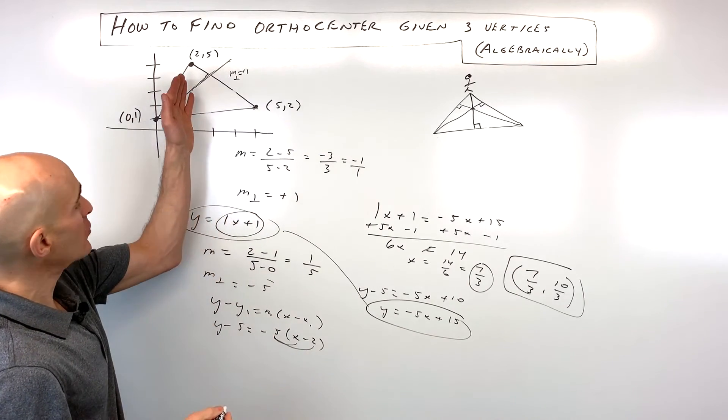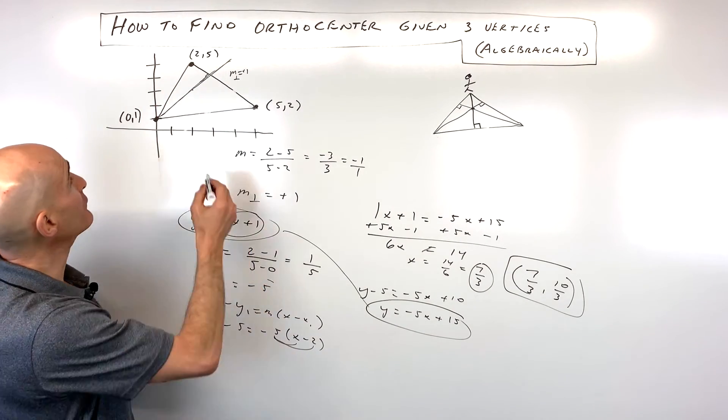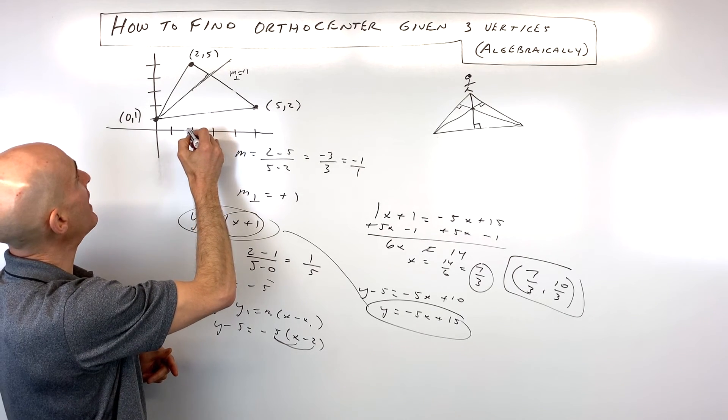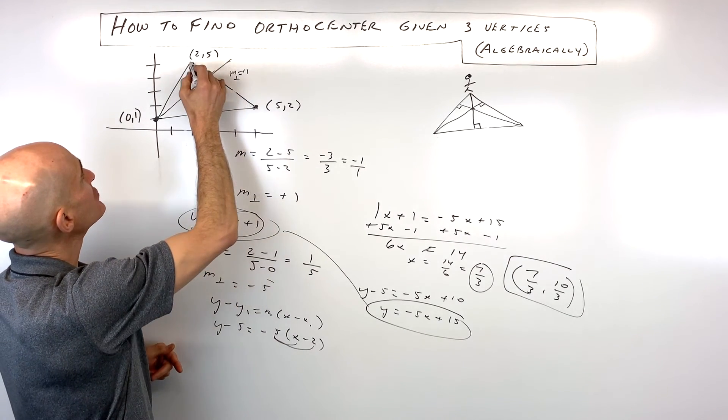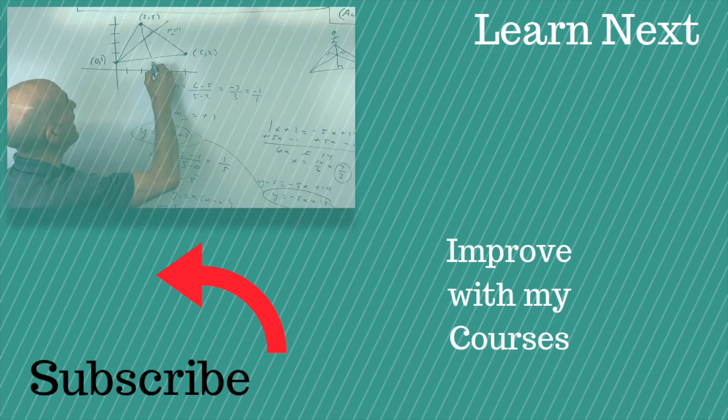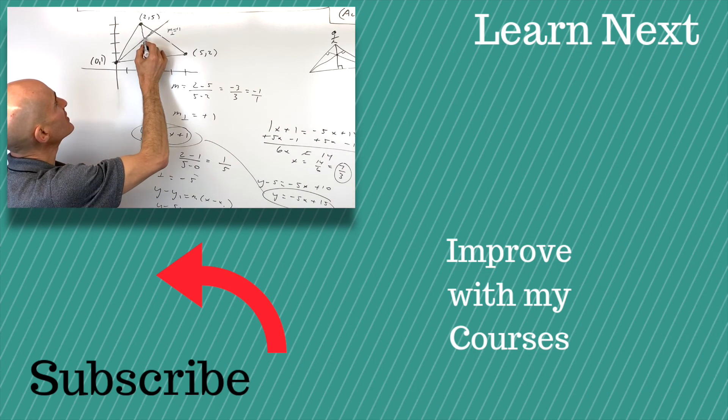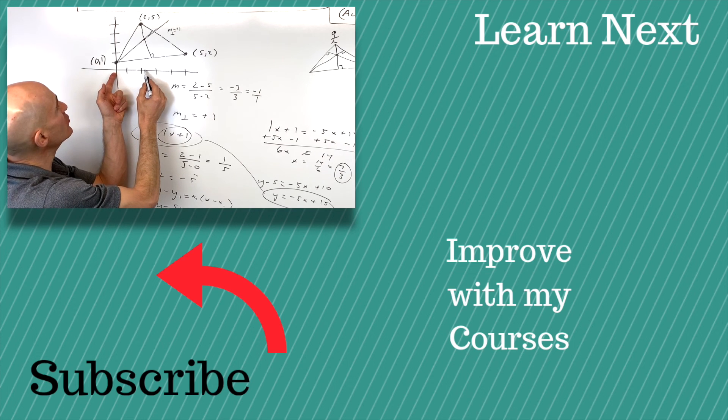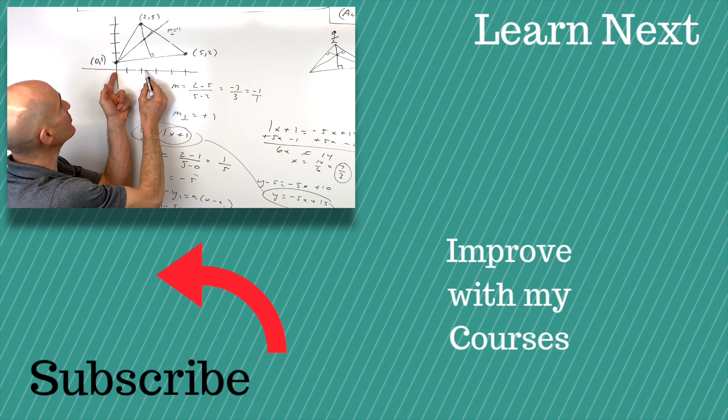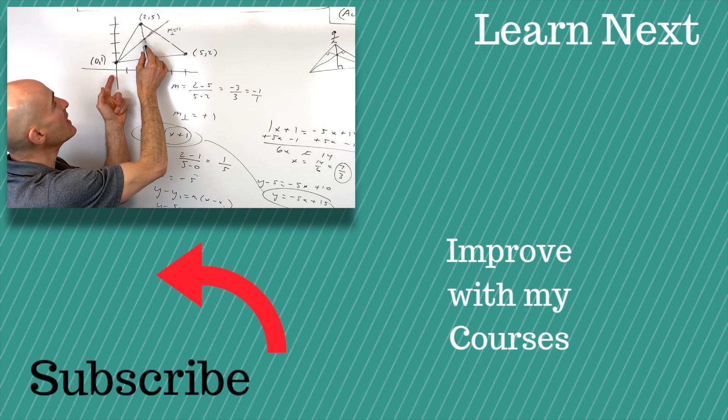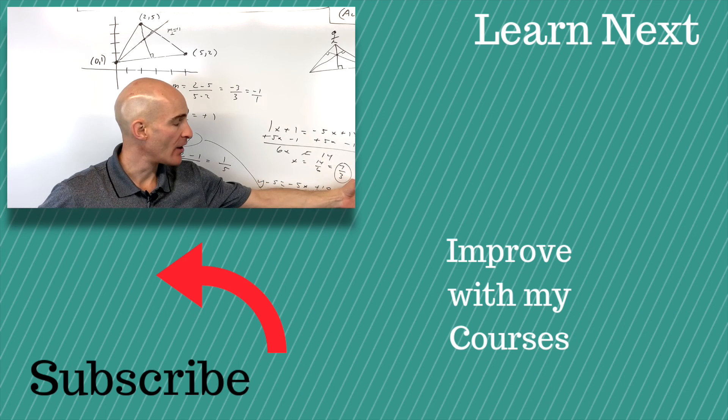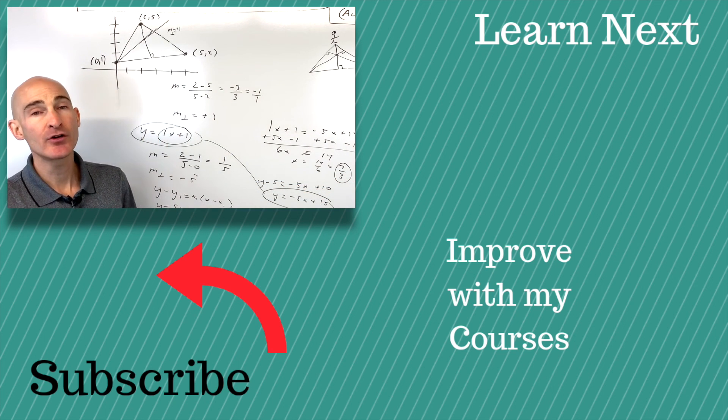Let's double-check. This line has a slope of -5, so we're going down 5 over 1. They should be crossing right there. 7/3 is 2 and 1/3, and 10/3 is 3 and 1/3. Yep, looks like it matches pretty closely, so my diagram is good. That's how you find the orthocenter algebraically.